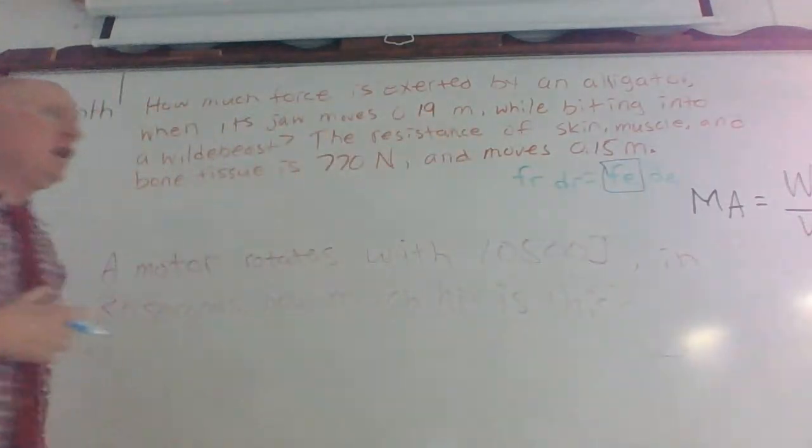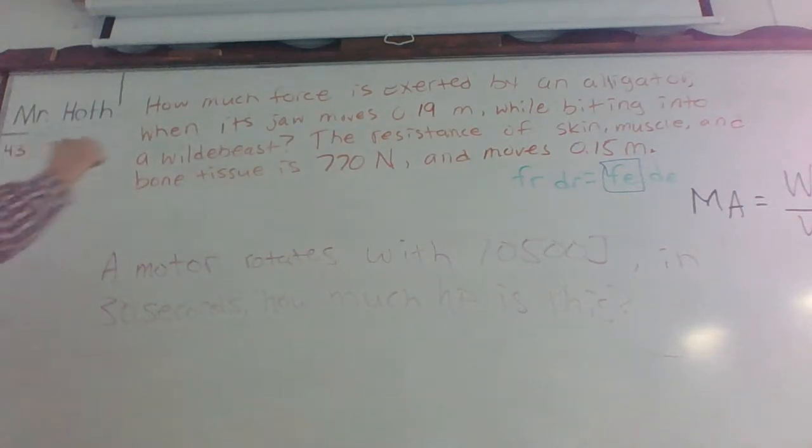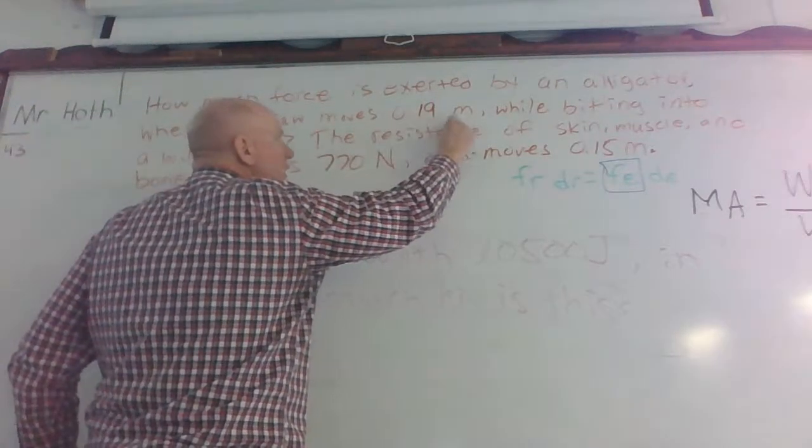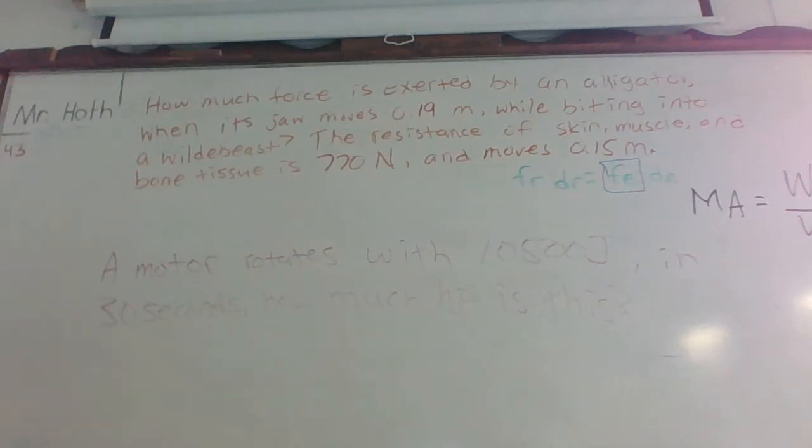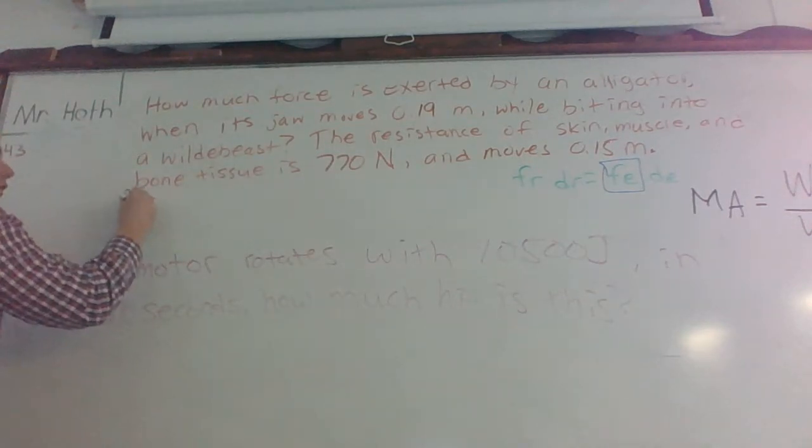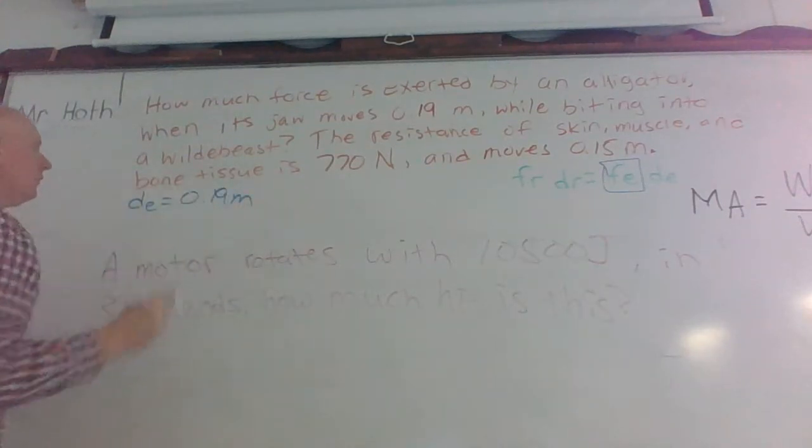So we're looking for this one right here. So if there's four variables, we have to know how many. You have to know three of those four variables then. So as we go forward, okay, it's saying when its jaw moves 0.19 meters while biting. So it's putting that much effort into how much it's biting. So that is possibly which distance, because it's measured in meters. It's effort distance. It has to move that far before it can start biting.